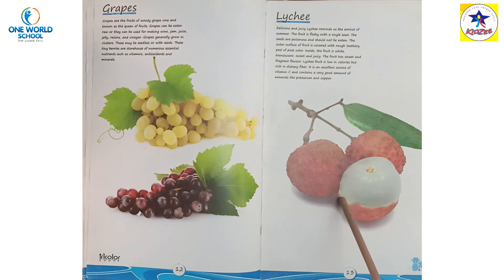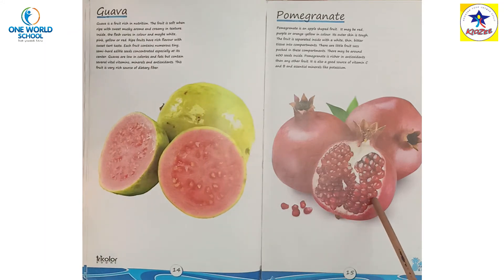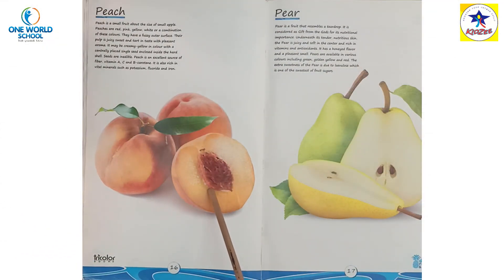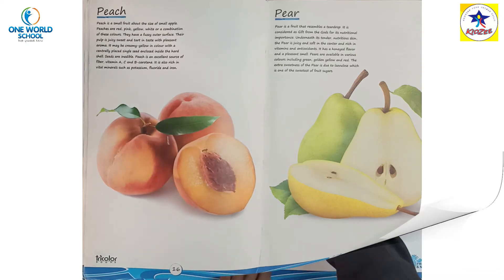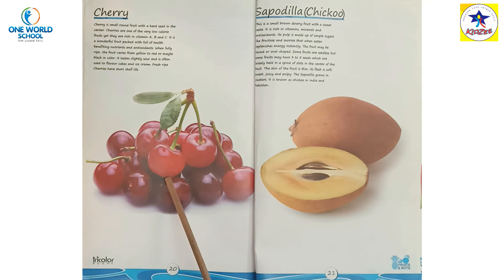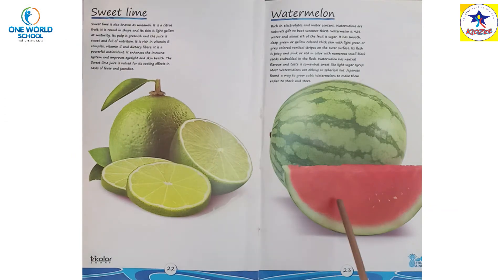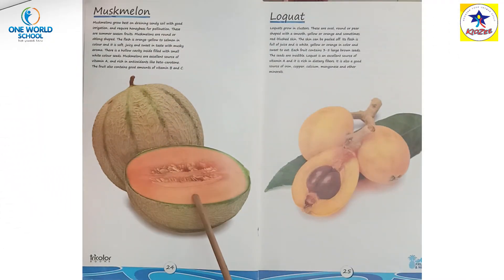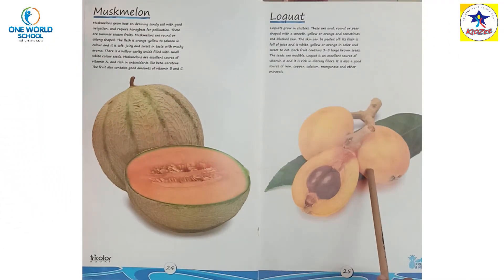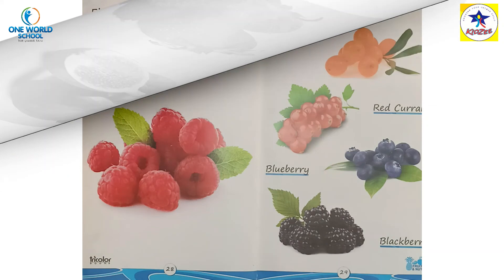Lychee — lychee in reddish color. Guava. Pomegranate. Peach. Pear. Plum. Apricot. Cherry. Chiku. Sweet lime. Watermelon. Muskmelon. Lakot. Fig. Strawberry — बच्चे को बहुत पसंद होता है strawberry। Raspberry.